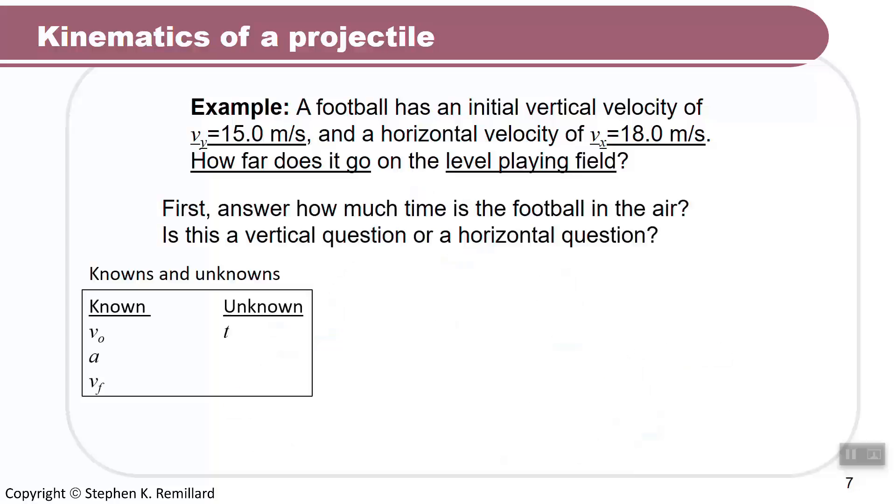Well, let's look at the knowns and unknowns. You know the initial speed in the vertical direction, you know the initial speed in the horizontal direction, you know the acceleration in the vertical direction, you know the final speed in the vertical direction, it's the opposite of the initial speed. So it started out at plus 15, it ended up at minus 15. And the unknown is time.